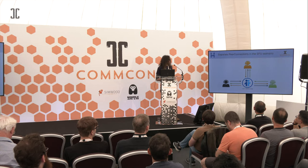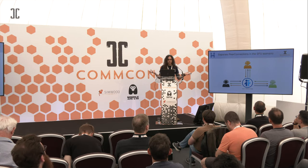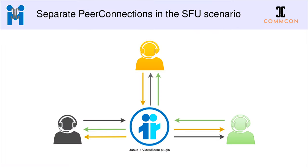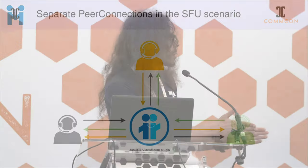In the SFU scenario where you have multiple users talking in a conference, each user contributes their own stream just once and it's sent to the other participants. Within Janus, all of those arrows need to be different peer connections if they relate to multiple video streams at the same time. If the black user wants to see the orange and green user, they can't use the same peer connection — they need a separate peer connection to receive each video.